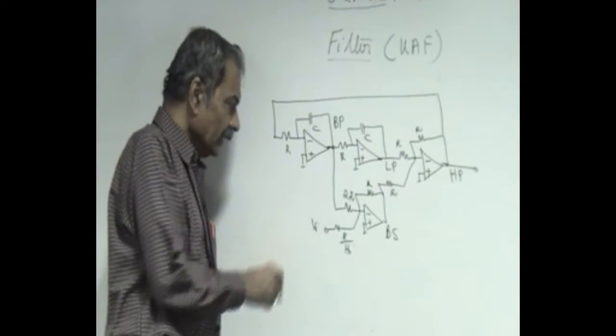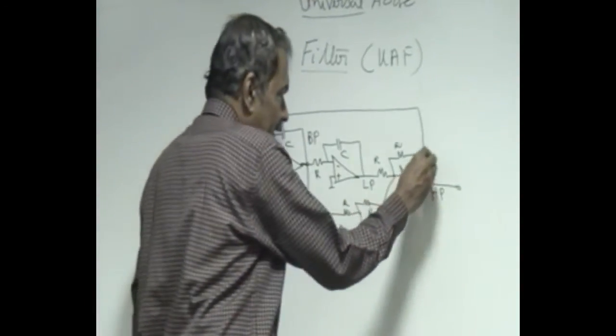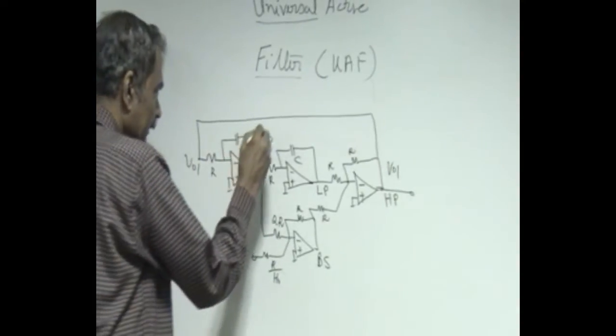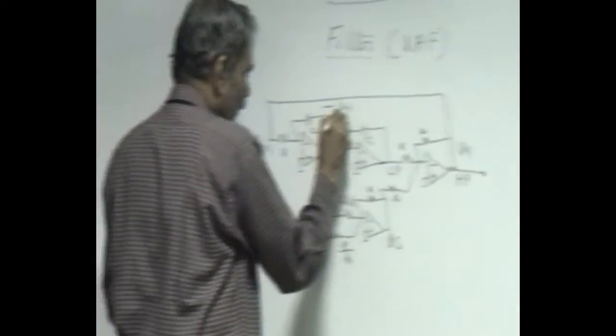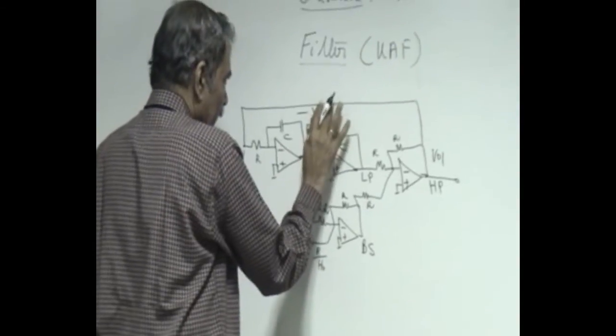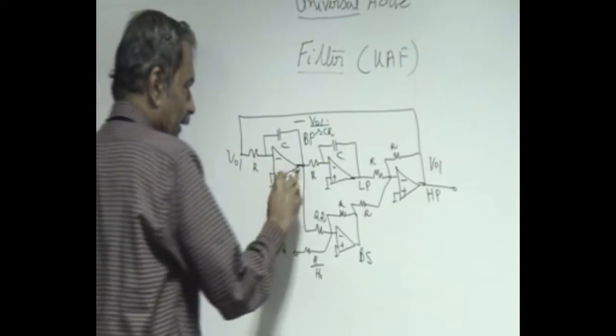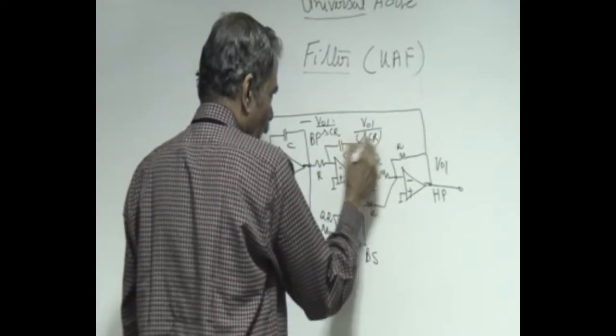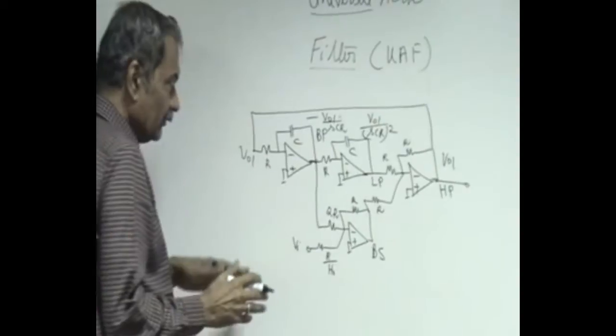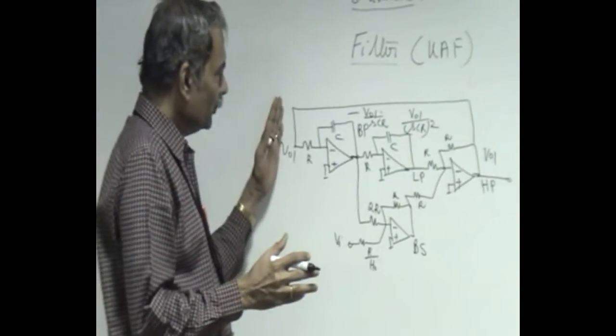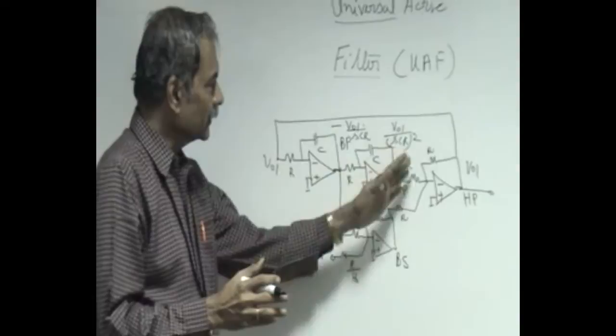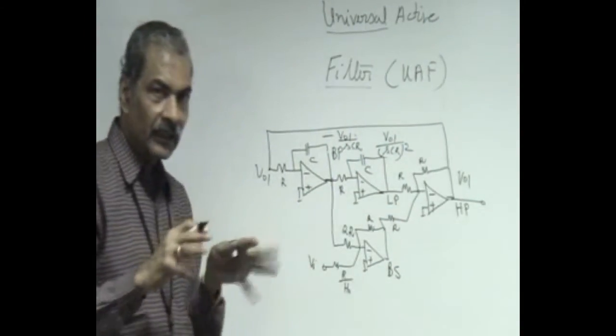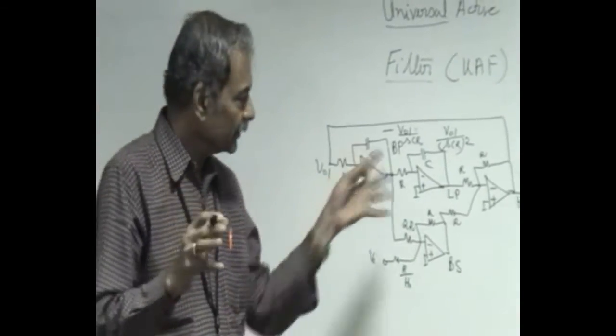So if V_I is applied here and if let us say V naught 1 is the output here. This V naught 1 gets integrated and appears as minus V naught 1 by SCR here once integrated and second time integrated it gives you plus V naught 1 by SCR square. So that is why from a basic input we are trying to get the other states, once integrated and twice integrated state so that we can set up a second order differential equation.